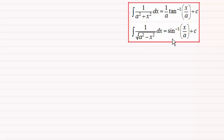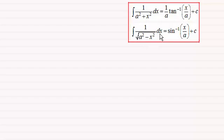Hi there. In this video I want to show you how we can work with these two standard integrals — I'm giving them to you without proof. The first is the integral of one divided by a squared plus x squared with respect to x, equal to one over a multiplied by the inverse tan of x over a plus a constant of integration c. The second is the integral of one over the square root of a squared minus x squared with respect to x, equal to the inverse sine of x over a plus c.